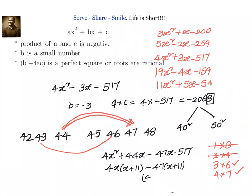We can take common 4x into (x plus 11) minus 47 into (x plus 11). So that is how we can easily find out the factors when b is a small number and product of a and c is negative. What we have to do? We have to go to the product.